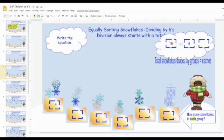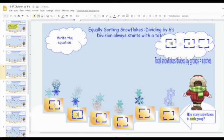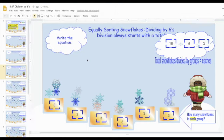So 1, 2, 3. 18 snowflakes divided by six groups equals three in each group. All right, have fun.